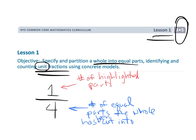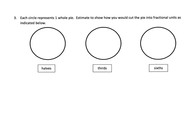The question says each circle represents one whole pie. Estimate to show how you would cut the pie into fractional units as indicated below. We want to first cut this into halves — pretty straightforward. Now for thirds...